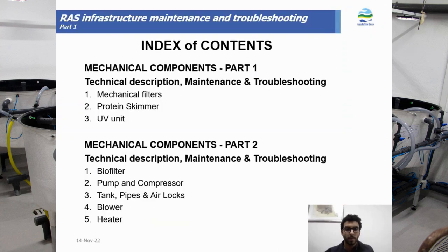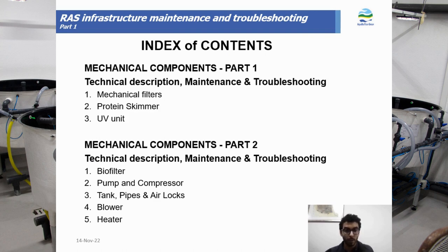This presentation is divided in two parts. The first part is about technical description, maintenance and troubleshooting for mechanical filters, especially drum filter, protein skimmer and UV unit. The second part is about technical description, maintenance and troubleshooting for biofilter, pump and compressor, tank, pipes and airlocks, blower and aerator.